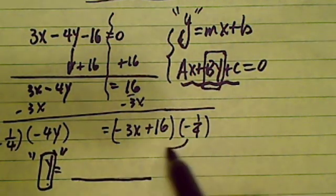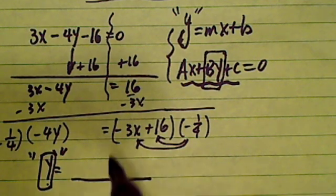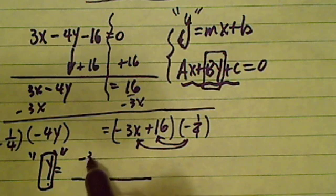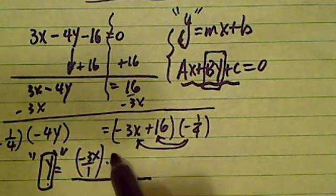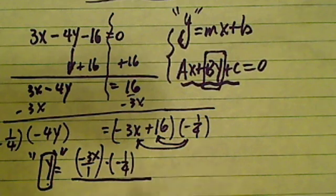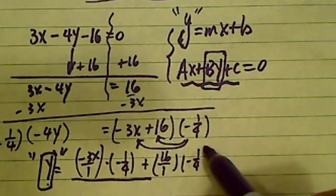Now I'm going to distribute this one into this term and into this term. This is pretty easy I hope. It's minus 3x over 1, really, times minus 1 over 4. That's one of them. Then plus 16 over 1 times minus 1 over 4.